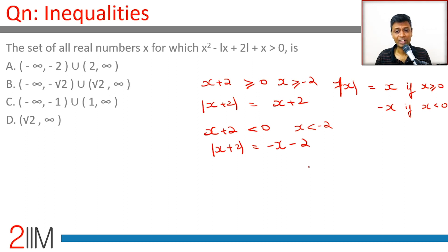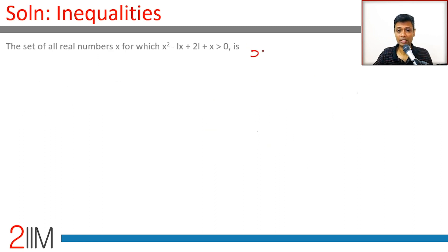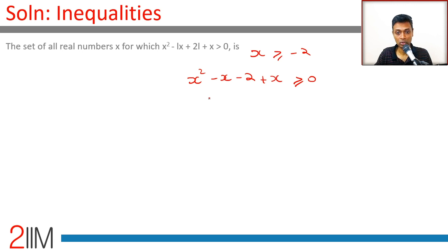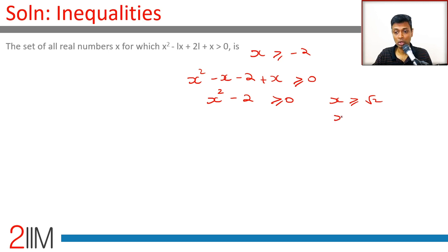Case 1: when x is greater than or equal to minus 2, the expression becomes x² minus x minus 2 plus x greater than 0, which simplifies to x² minus 2 greater than 0. This gives us x is greater than or equal to root 2, or x is less than or equal to minus root 2.